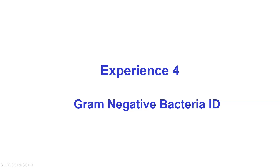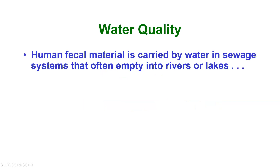Experience 4 deals with gram-negative bacteria. One thing we deal with when we talk about gram-negative bacteria is water quality. Gram-negative bacteria tend to be associated with the human digestive system. Human fecal matter is carried by water in sewage systems that often empties into rivers or lakes. In the United States we tend to have a very excellent water system in urban areas, but that does not necessarily carry throughout the rest of the world or in very rural areas.